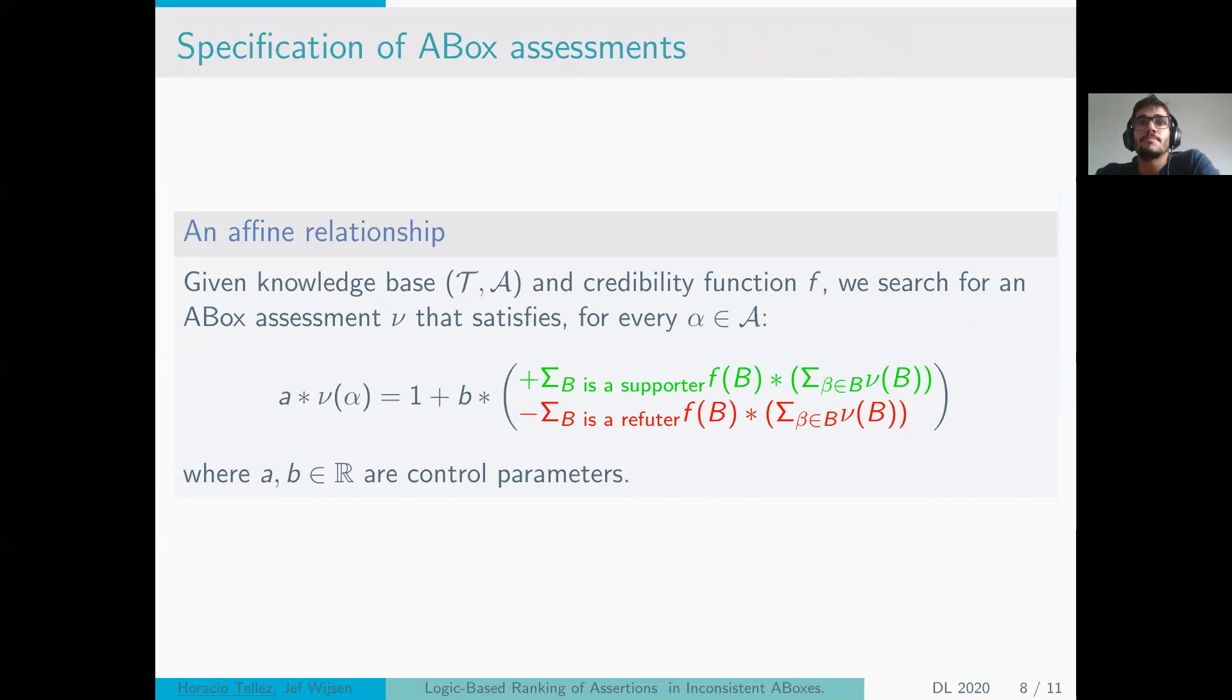We combine all of this in a unique equality. This equality: when you have a knowledge base (T,A) and credibility function F, the assessment ν for every α in the A-box says this: the assessment of α should be equal to a minimal value, and this minimal value will then be influenced by the credibility of supporters and refuters. Also, the initial credibility should then be influenced by the assessment of assertions that are present in such supporters and refuters. We then introduce two parameters a and b that are real numbers to control the force of the influence of supporters and refuters in each assessment. We then use this system of equalities for every assertion in the A-box to deduce our assessments.